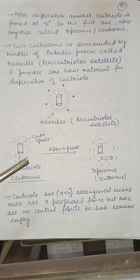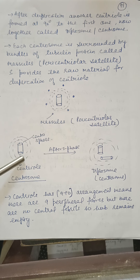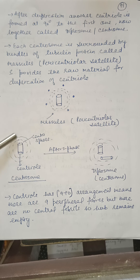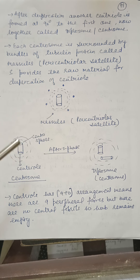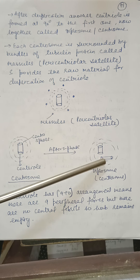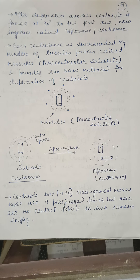Before S-phase, one centriole was present surrounded by its centrosphere, forming the centrosome. After S-phase, this centriole divides to form two centrioles, and a diplosome is formed.